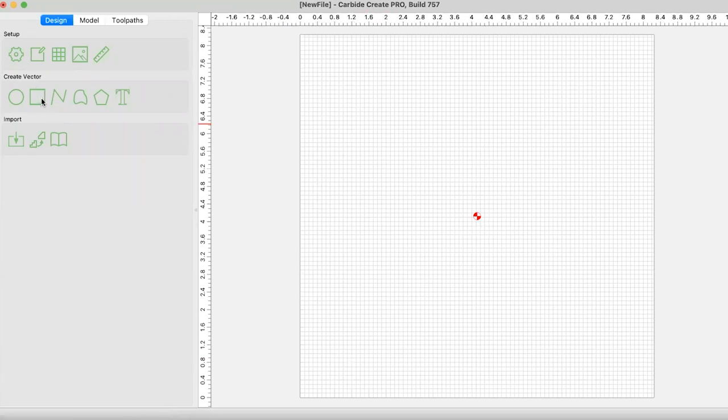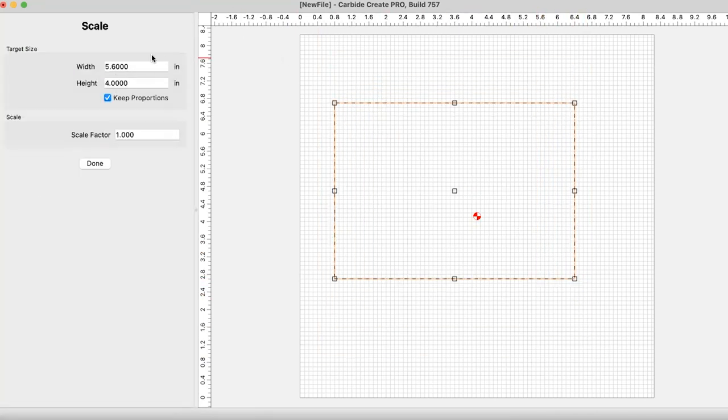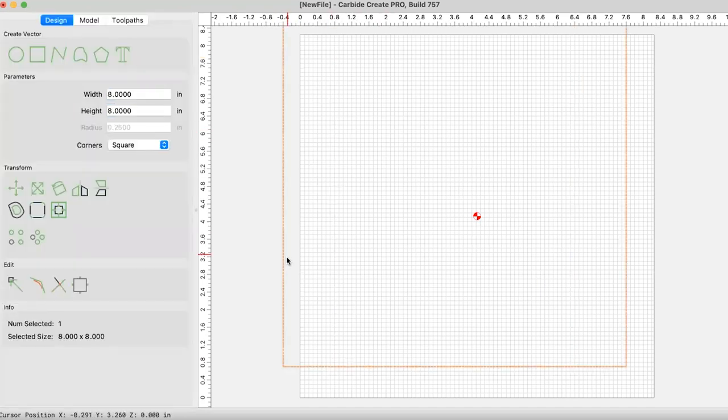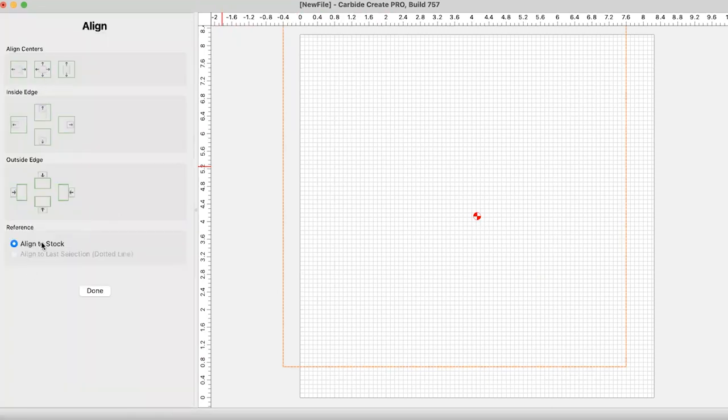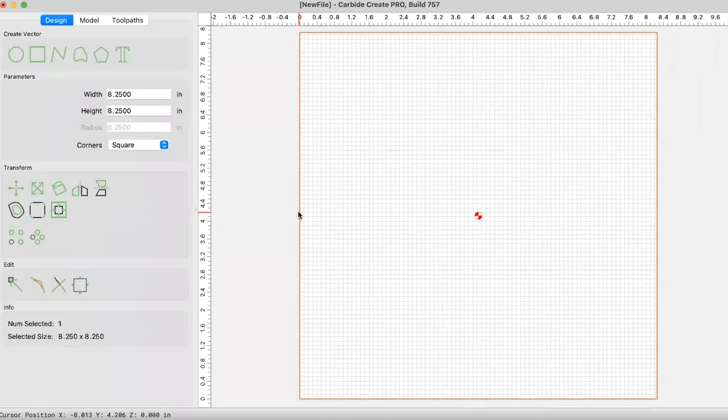And the reason why we do that is because I want to mill out the whole wasteboard and the machine knows where the center of it is based in Carbide Motion when you do rapid travel. So instead of me trying to guess where the center is, I'm going to let the machine do that for me. My zero point is in the center right here and it's shown by this checkered circle.